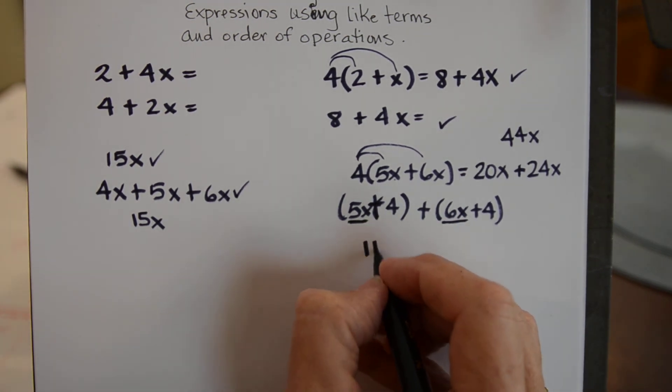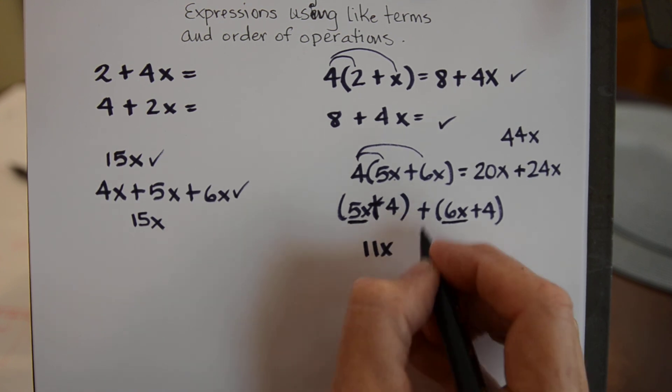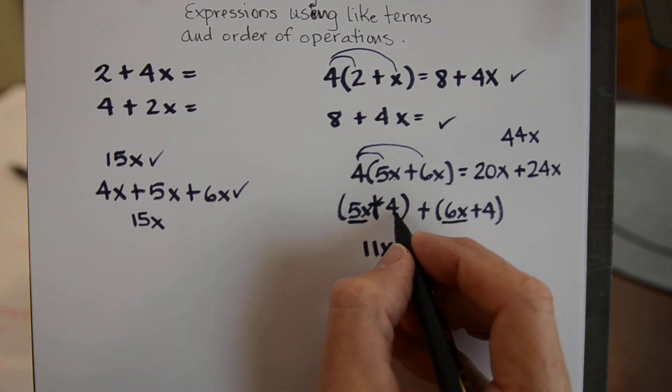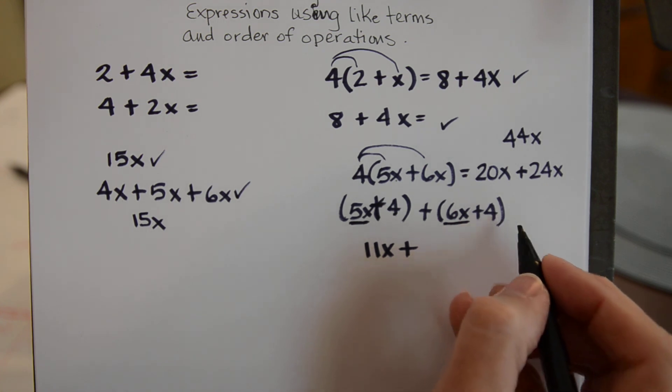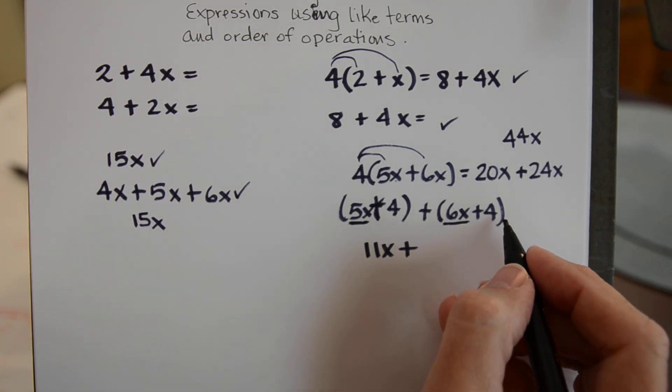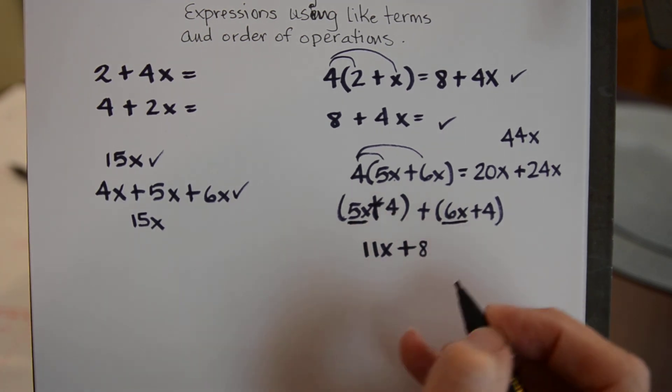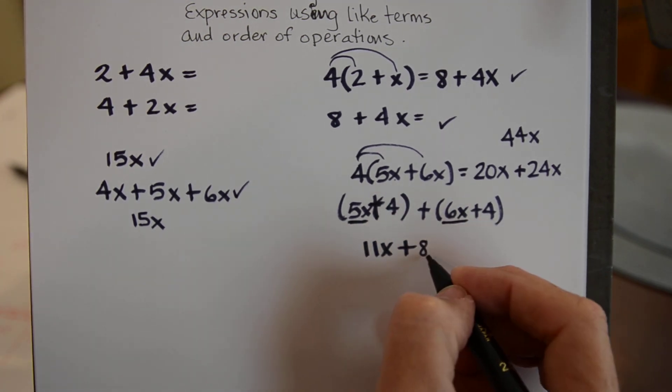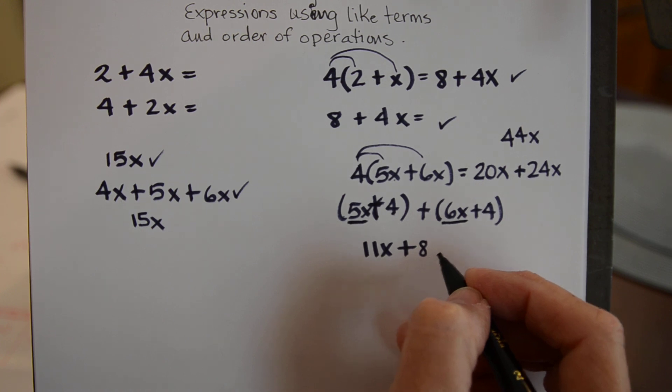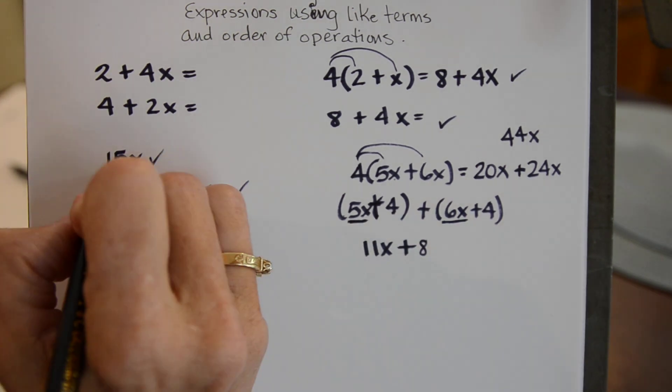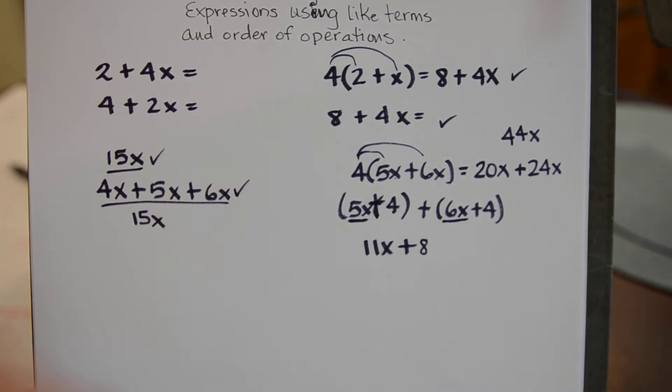So 5 plus 6 is 11 and we still have the x. We keep the plus sign and then we have 4 plus 4. Those are like terms. Not because they are 4 but because they are just a number by themselves. So 4 plus 4 is 8. So that is what this simplifies to. So the two that are the same are this one and this one.